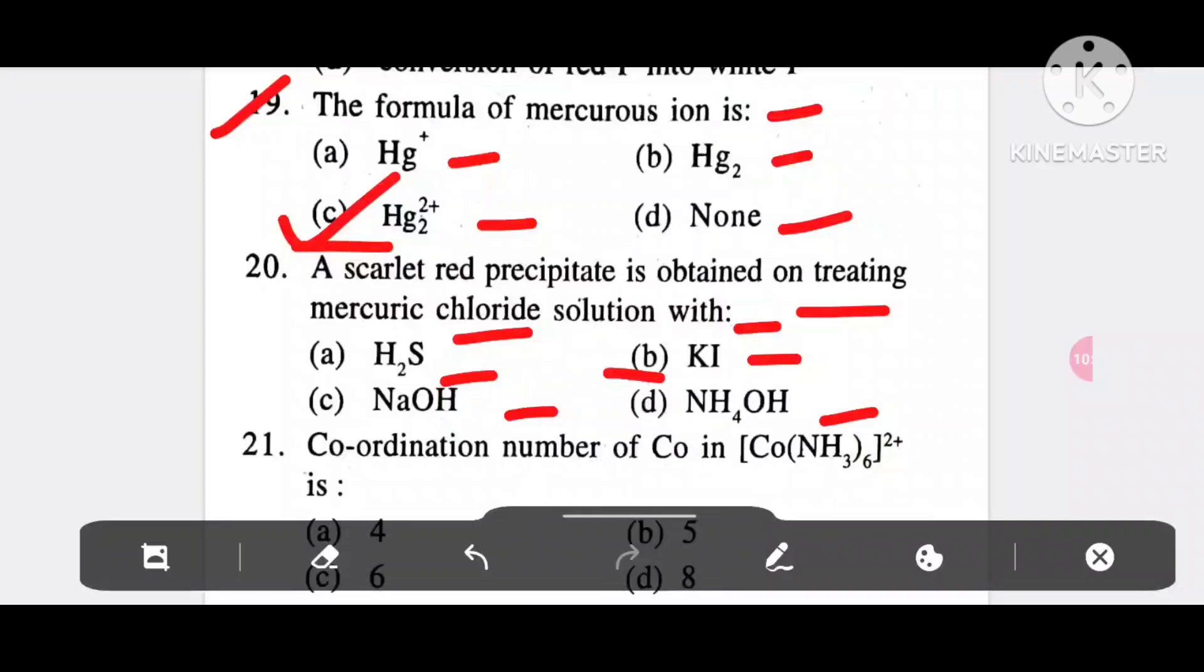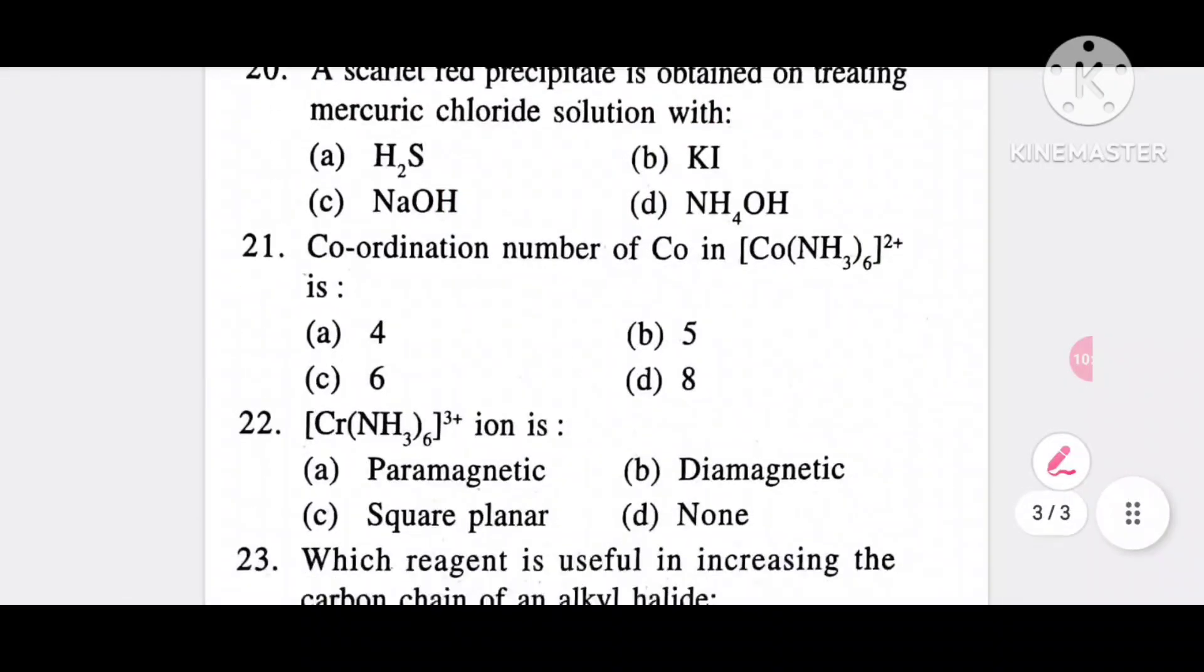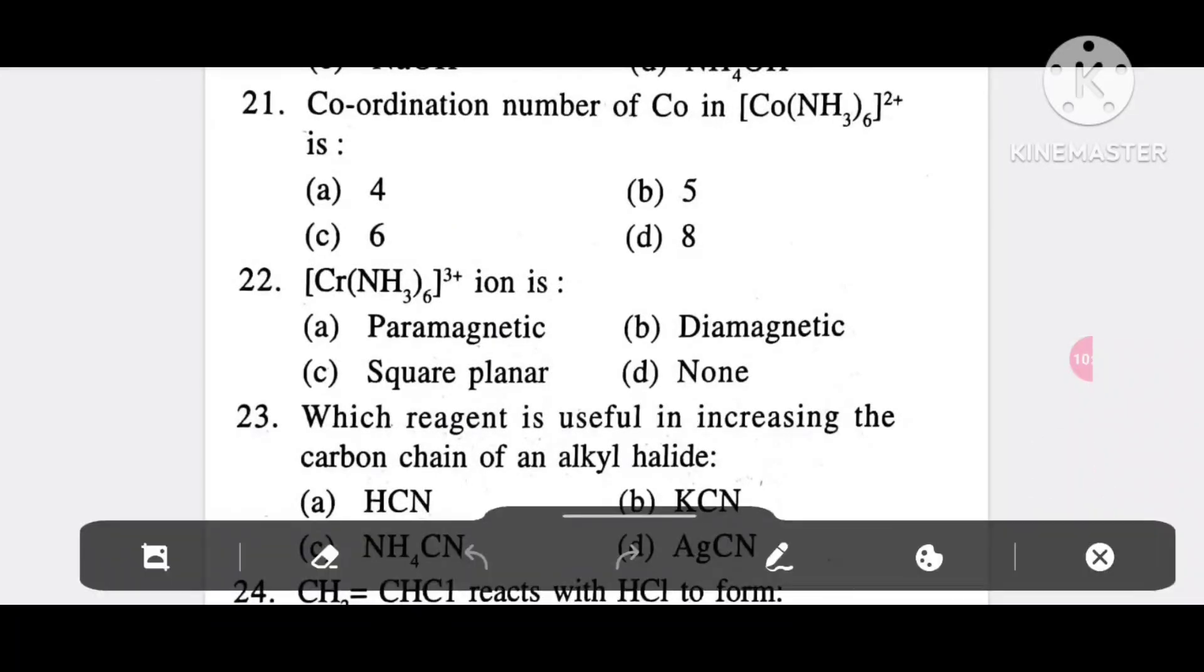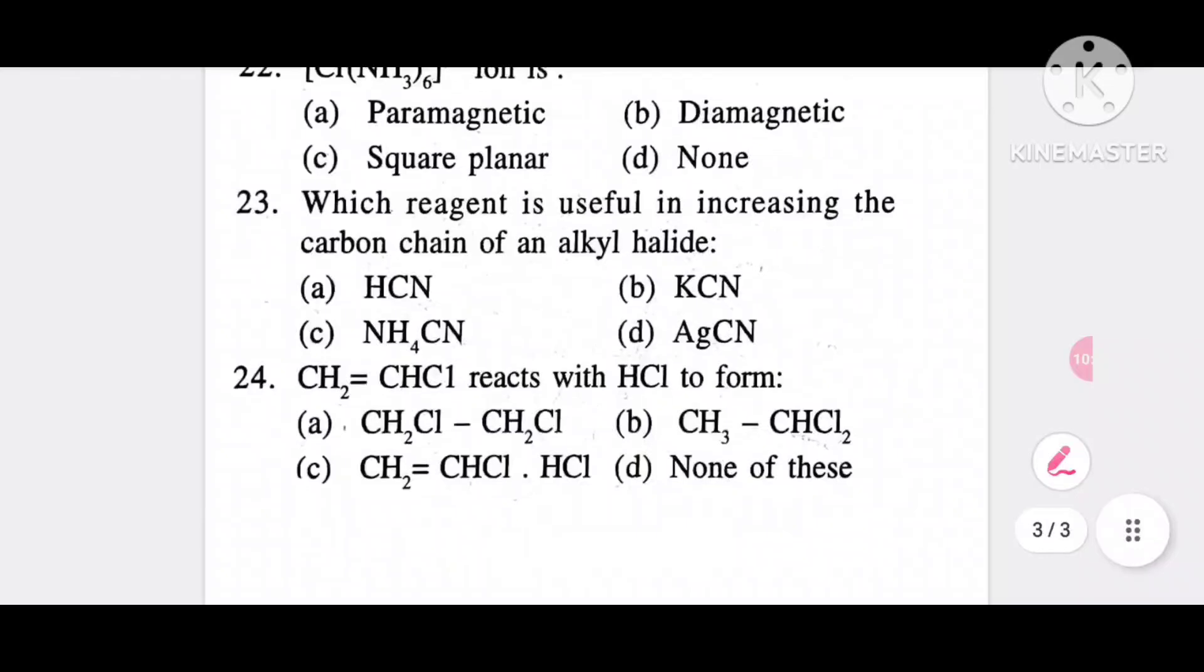Question 21: Coordination number of Co in [Co(NH3)6]^2+ is option A, 4; option B, 5; option C, 6; option D, 8. It is option C, 6. Question 22: [Co(NH3)6]^3+ ion is option A, paramagnetic; option B, diamagnetic; option C, square planar; option D, none. It is paramagnetic, option A.